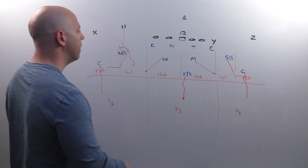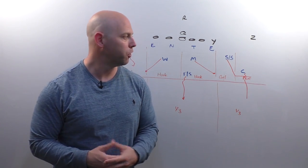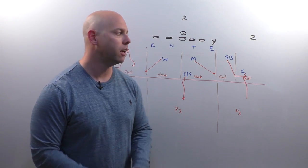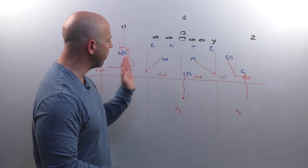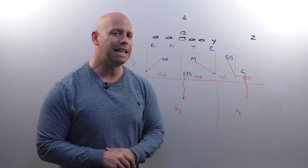So you don't need to tell me we're going to run four verticals against this. Of course you are. It's cover three. Of course you're going to run four verticals against it. You're going to run curl flat concepts because you've only got four underneath defenders. It's a great run stopping coverage, and it's a fast, easy install.